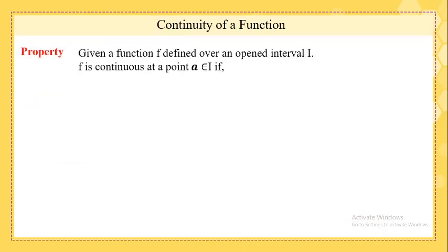Property: Given that the function F is defined over an open interval I, F is said to be continuous at a point a in I if the limit of f(x) as x tends to a is equal to f(a).